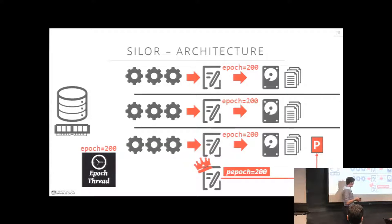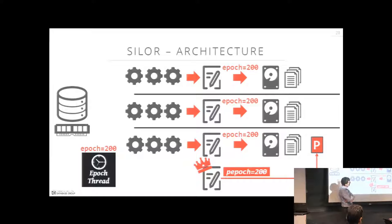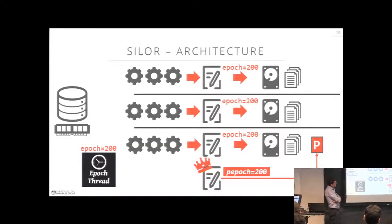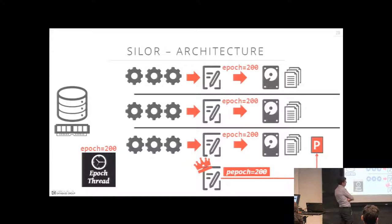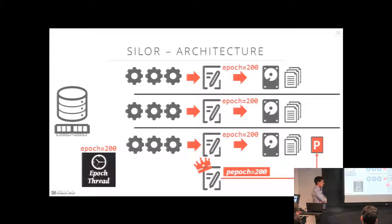There's an open question about why the persistent epoch needs to be persisted to disk rather than just computed from the log files at recovery time by finding the maximum epoch already present. The answer isn't fully clear — it may be needed to determine exactly where recovery should start, but it's a good question. They also recommend the log buffer pool be about 10% of total available memory.